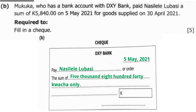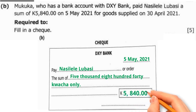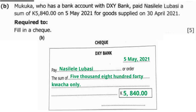Then we also write the figures there — 5,840 kwacha. After the decimal point, there are no cents, so we write zeros, just like I've done.